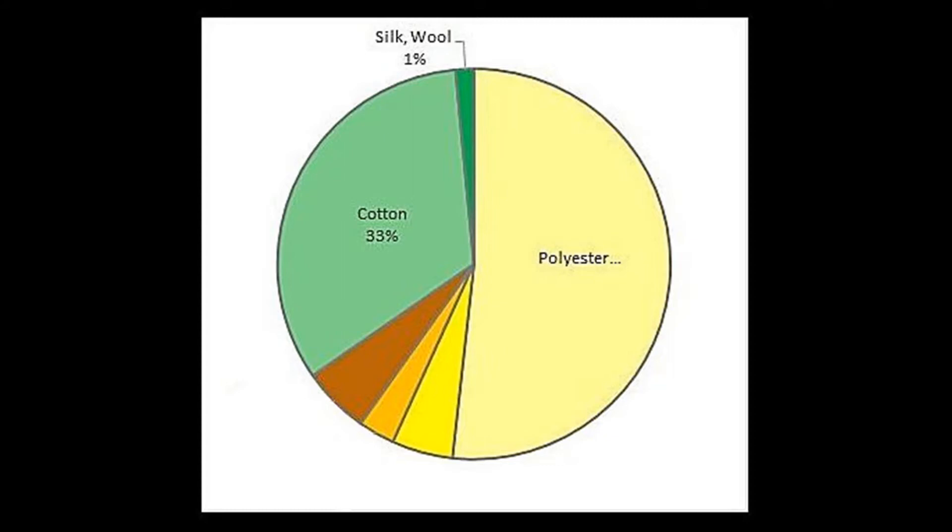As far as synthetic fibers go, that category is almost entirely made up of polyester, considering it's used in clothing and carpeting and all sorts of different applications. The next would be nylon, which has extensive use in carpets and upholstery.